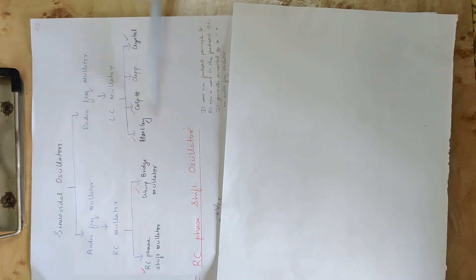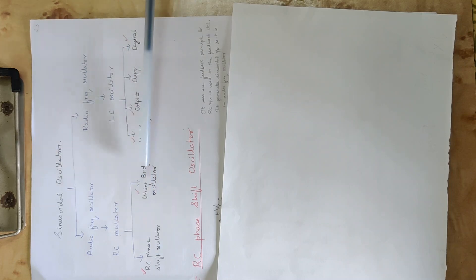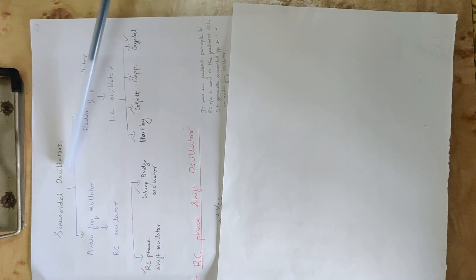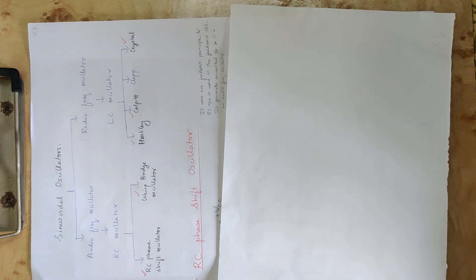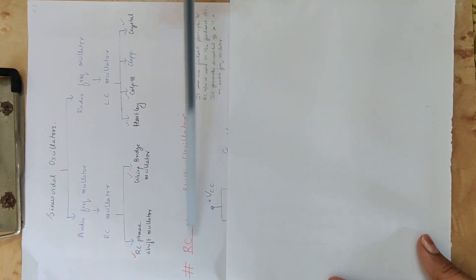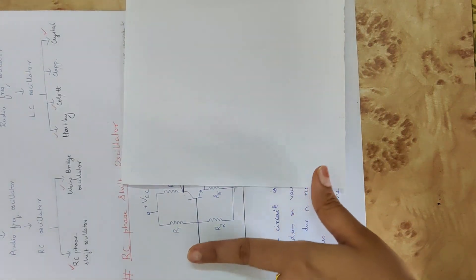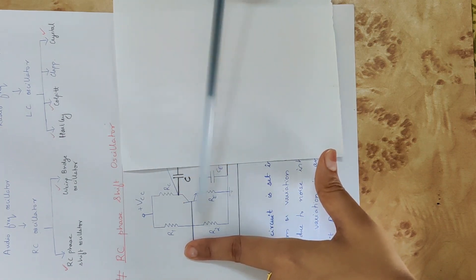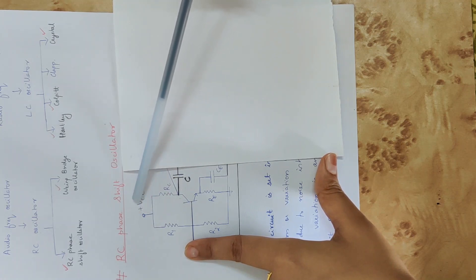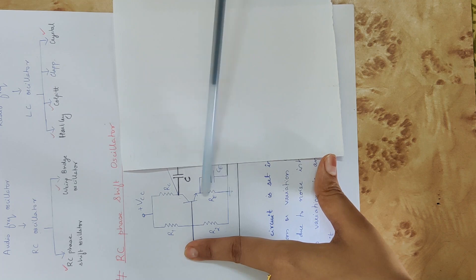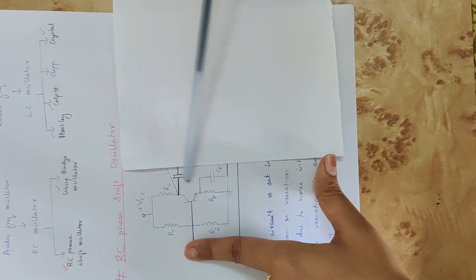In the feedback network we use an RC network; for LC oscillators we use an LC network — both produce a sinusoidal waveform output. Looking at the RC phase shift oscillator figure, it uses a common emitter amplifier with DC supply, voltage divider biasing R1 and R2, collector resistance RC, emitter resistance RE, bypass capacitor CE, and coupling capacitor.